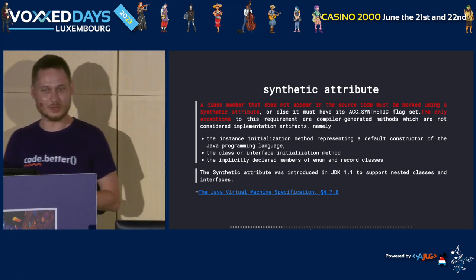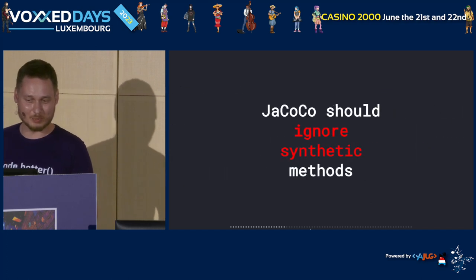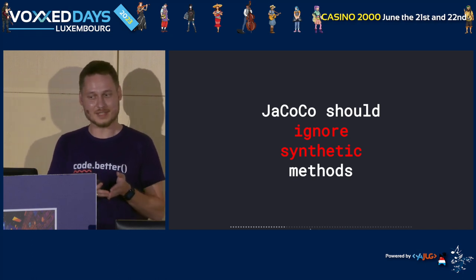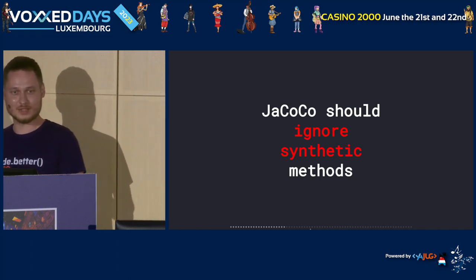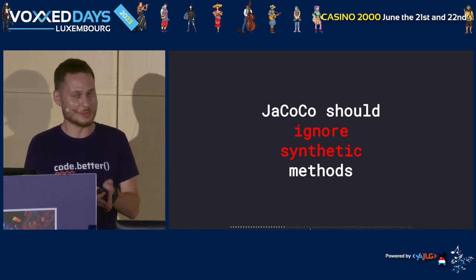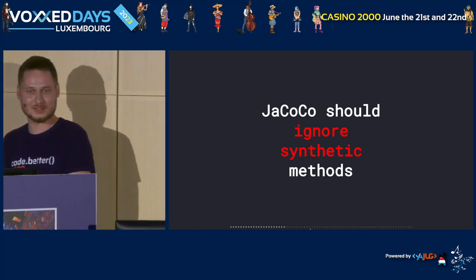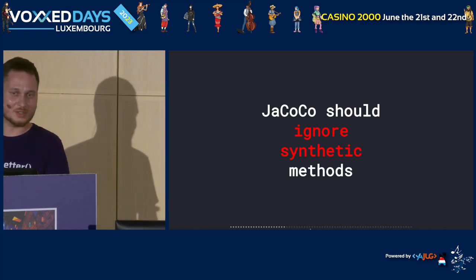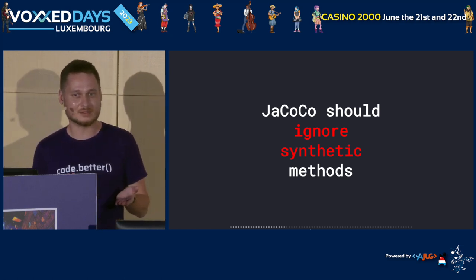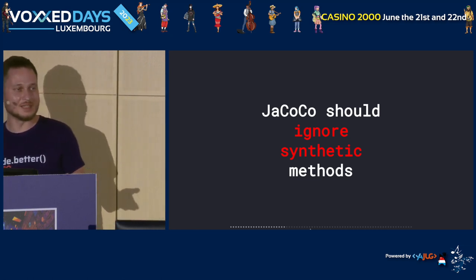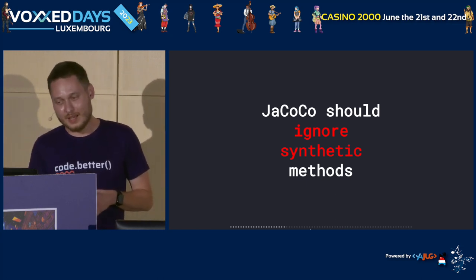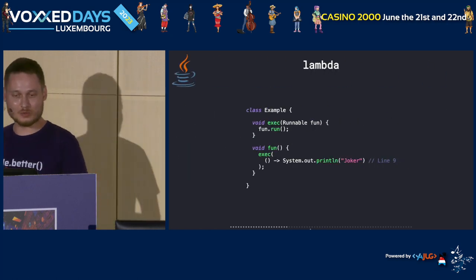The JVM specification paragraph 4.7.8 says: 'A class member that does not appear in the source code must be marked using a synthetic attribute.' Everything not in the source code should be marked synthetic. The only exceptions are the default constructor, class/interface initialization methods, and implicitly declared members of enum and record classes — like the 'values()' and 'valueOf()' methods in enums.